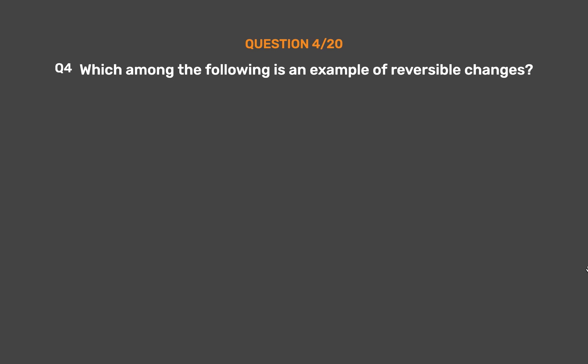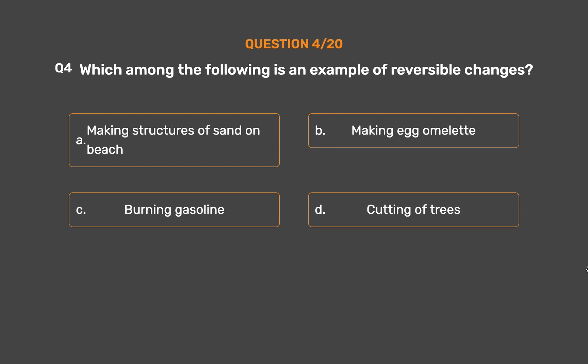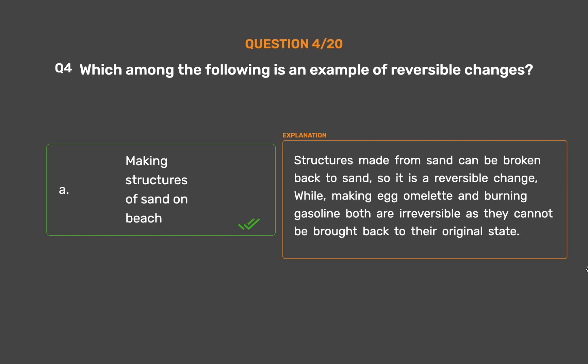Question number 4: Which among the following is an example of reversible changes? Option A: Making structures of sand on beach. Option B: Making egg omelet. Option C: Burning gasoline. Option D: Cutting of trees. The correct answer is Option A, Making structures of sand on beach. Structures made from sand can be broken back to sand, so it is a reversible change. While making egg omelet and burning gasoline are both irreversible as they cannot be brought back to their original state.